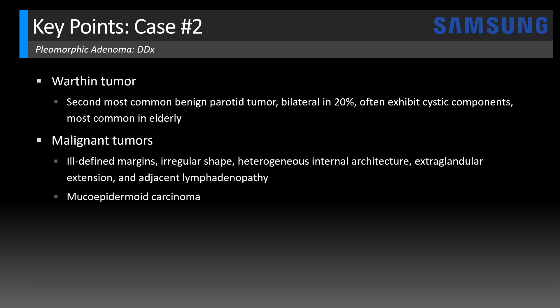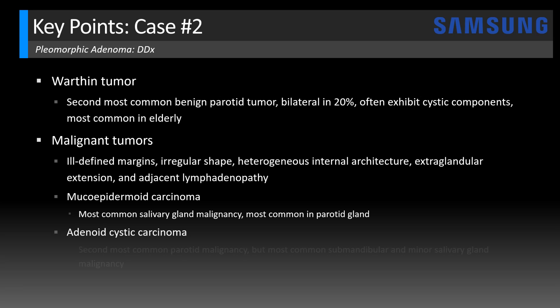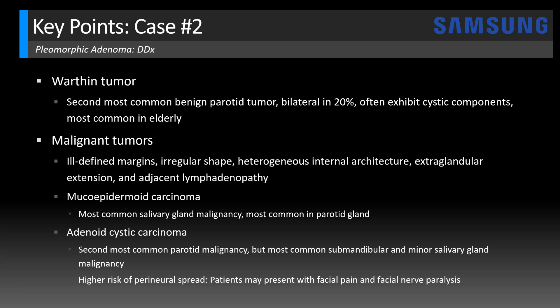In the parotid gland, the most common malignant tumor is mucoepidermoid carcinoma — the most common salivary gland malignancy overall. The second most common in the parotid gland is adenoid cystic carcinoma, which is actually the most common submandibular and minor salivary gland malignancy. This tumor has a higher risk of perineural spread along the facial nerve, and patients can present with facial pain or facial nerve paralysis. Typically, pleomorphic adenoma patients present with a smooth, painless, enlarging mass. So anytime you scan a patient with facial pain and a parotid mass, that raises suspicion for a malignant tumor.